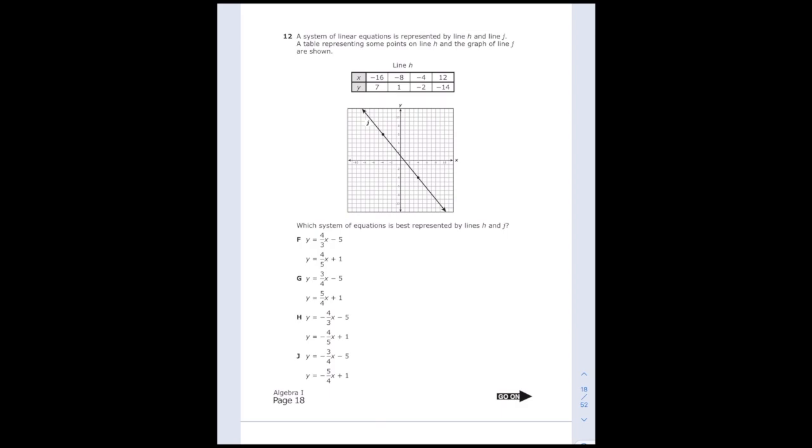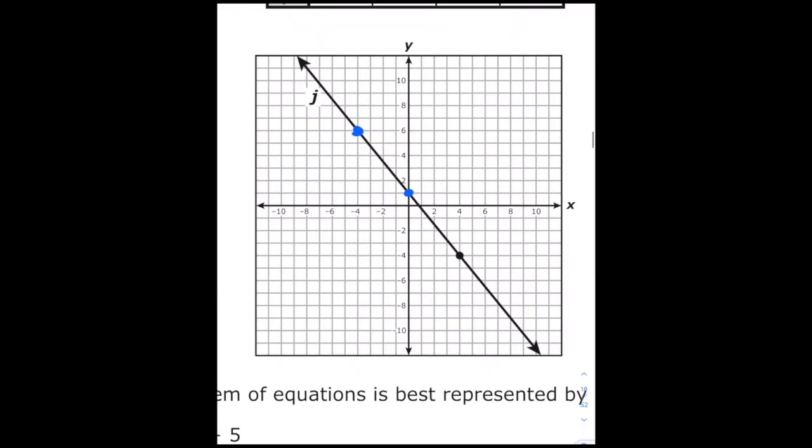So I'm going to find the equation of line J first, since they give us the graph. And then I'm going to see if there's any answer choices that have that. So for line J, I'm going to find the slope first. And so I just need to pick two points, one that's already there. And then I'm also going to use the y-intercept.